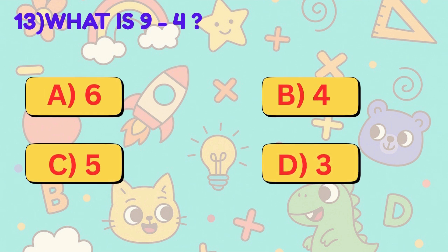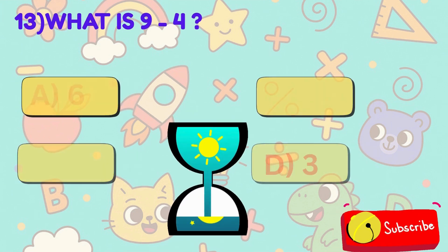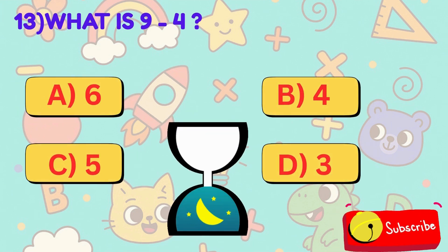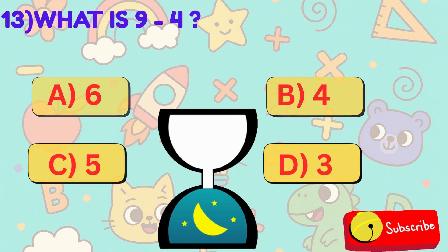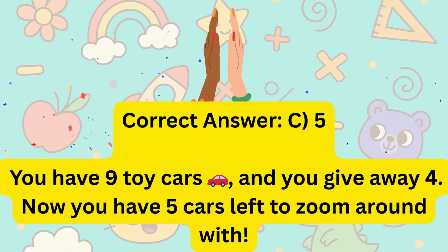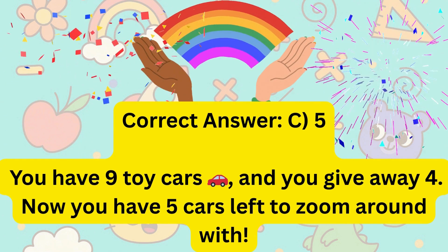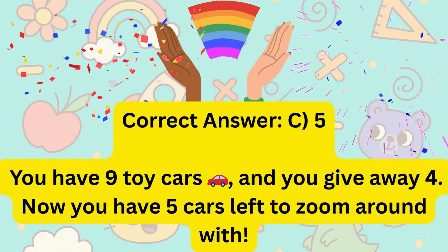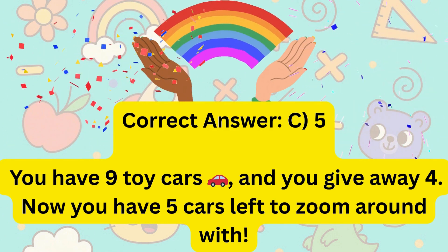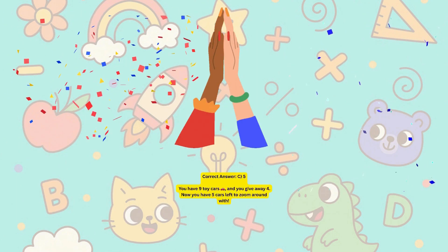13. What is 9 minus 4? Is it A, 6, B, 4, C, 5, or D, 3? Correct answer is C, 5. You have 9 toy cars and you give away 4. Now you have 5 cars left to zoom around with.